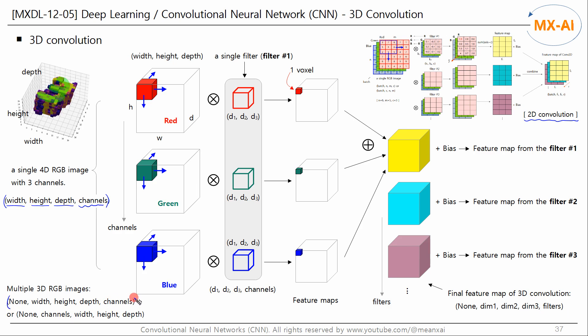Multiple 3D RGB images have a five-dimensional structure, containing the number of images. The first dimension is the batch size, i.e. the number of 3D images. And the last dimension is the number of channels.